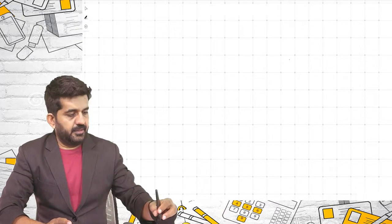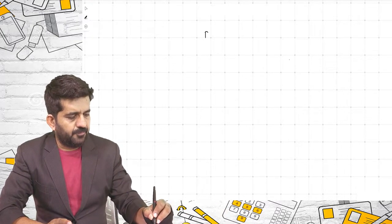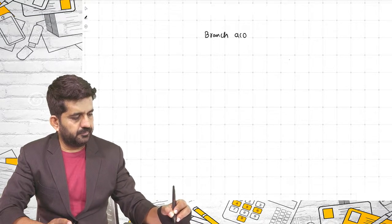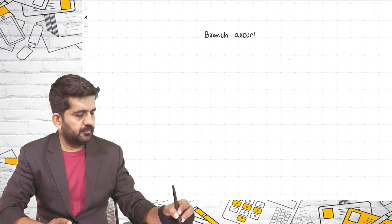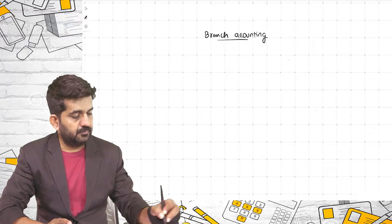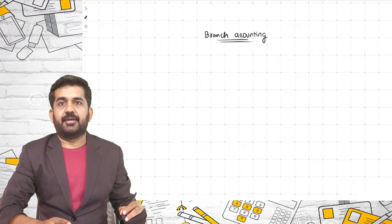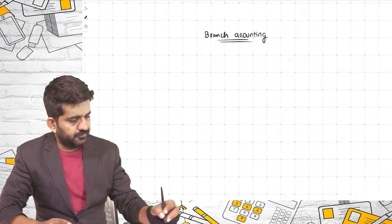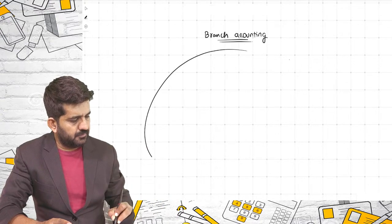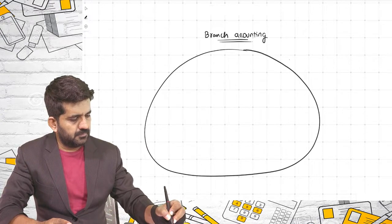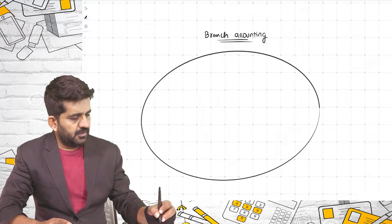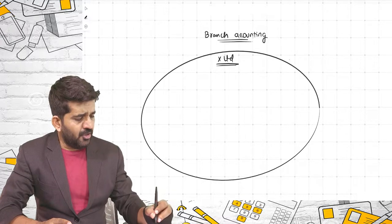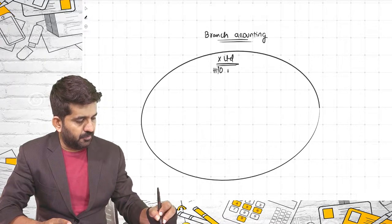We will learn the concept of branch accounting. Let us first understand types of branches. Consider a company, X-Limited, whose head office is in Mumbai.